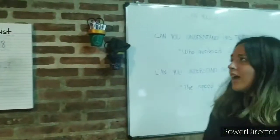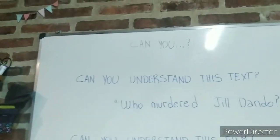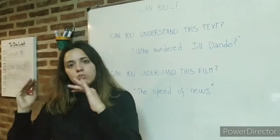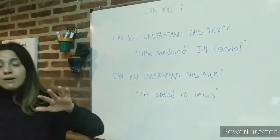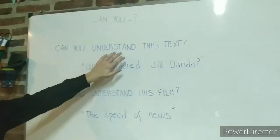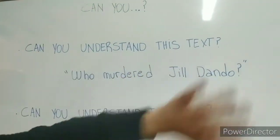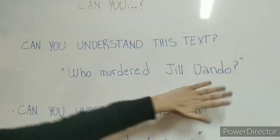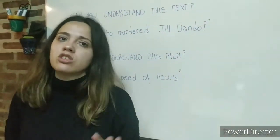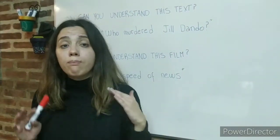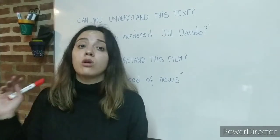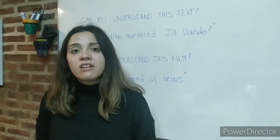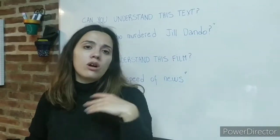Let's go to the board. The question is 'Can you?' We are going to divide the class into two big activities. Number one is about the text — it says: 'Can you understand this text?' The title of the text is 'Who Murdered Jill Dando?' Jill Dando was a very popular BBC presenter, a journalist and TV presenter, and she was murdered. You will have to read the text and do some activities about it.